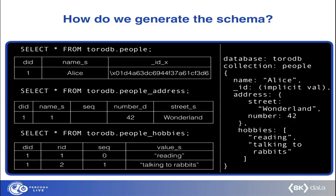When we face an embedded document, we consider it as a one-to-one relationship, so it goes to an external table. In this case, 'address' — which is an embedded document — will go to an external table called 'people_address' with the same pattern: it has properties like street and number, plus internal columns that allow us to match parent-child relationships. When we find an array of values, it is considered a one-to-many relationship. For every value in the array, we create a new row on the destination table, in this case called 'people_hobbies'. If the array contains objects, they will have their own columns; if they are scalar values, a value column is created.